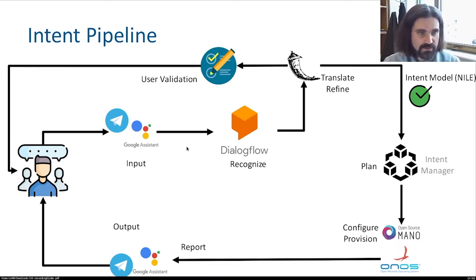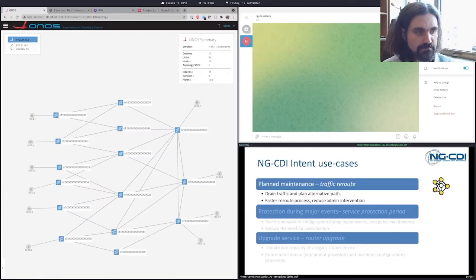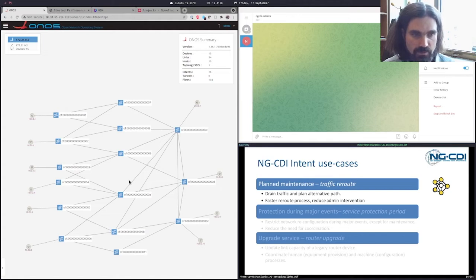For the rest of this demo, I'm going to describe the topology and technologies used to realize it, and we're going to see some of our intents in action. For this demonstration, we're going to use Mininet to emulate a topology for an SDN network that resembles the topology of the 21CN BT network.